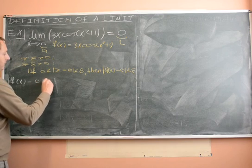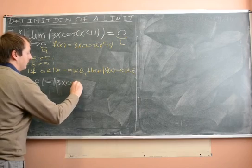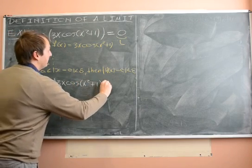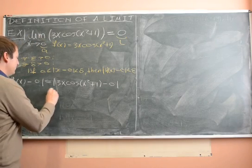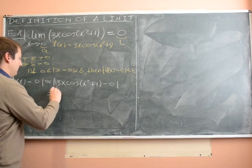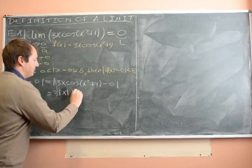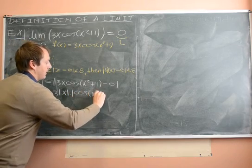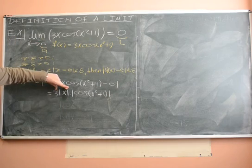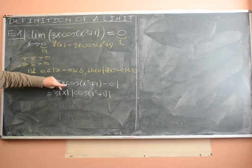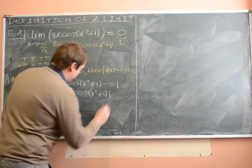So f of x minus 0 is 3x cos of x squared plus 1, minus 0. This is of course equal to 3 times absolute value of x, times absolute value of cos(x² + 1). This is the kind of term we want — absolute value of x minus 0 — and the one we don't want is the one involving cos.